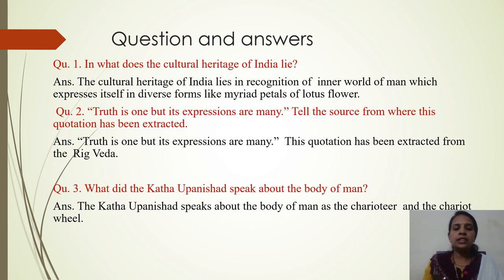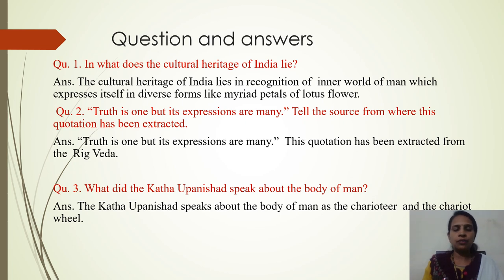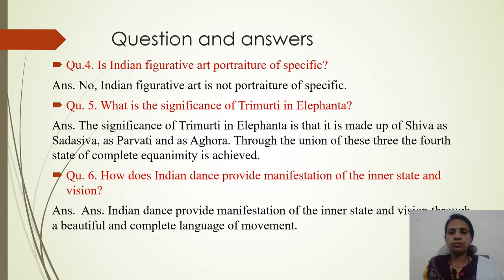Question number three: What did the Katha Upanishad speak about the body of man? Katha Upanishad ne manushya ke sharir ke baare mein kya kaha gaya hai? The Katha Upanishad speaks about the body of man as the chariot. Toh manushya ke sharir ko rath kaha gaya hai, aur intellect, tark shakti ya buddhi ko uska driver kaha gaya hai — intellect as the chariot driver. Question number four: Is Indian figurative art portraiture of the specific? And the answer will be no — Indian figurative art is not portraiture of the specific. It is always universal and impersonal. Toh Bharati kala hamesha sarvabhaomik hai, vyaktigat nahin hai.